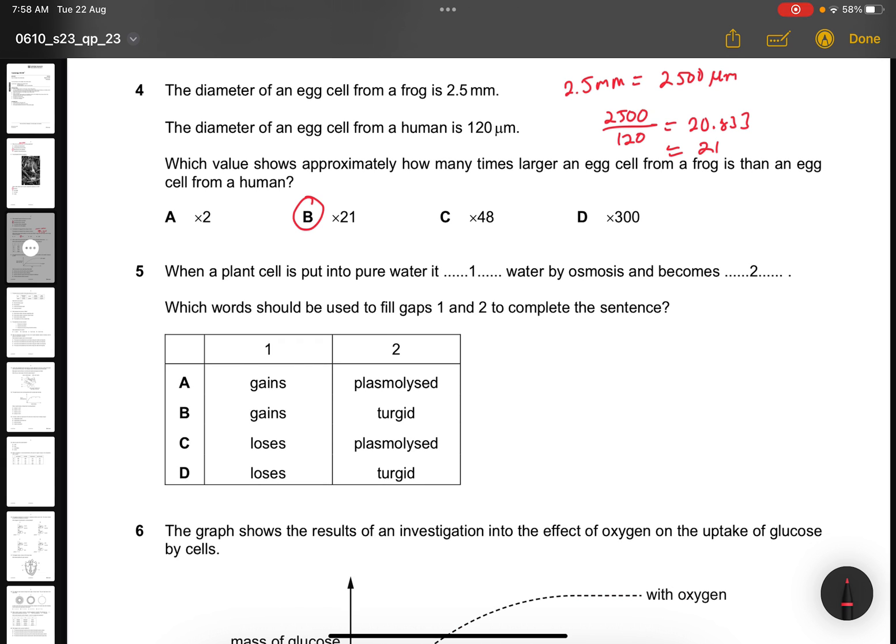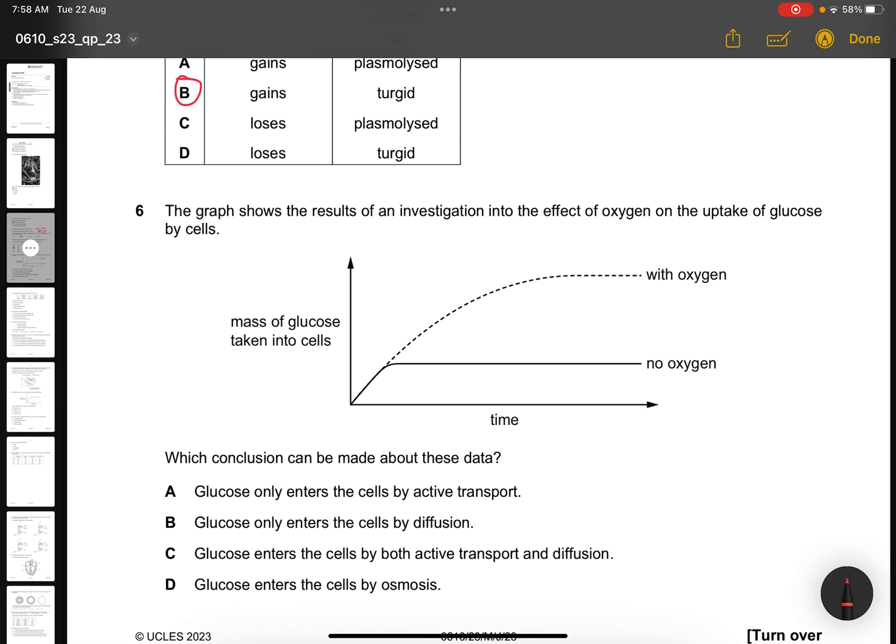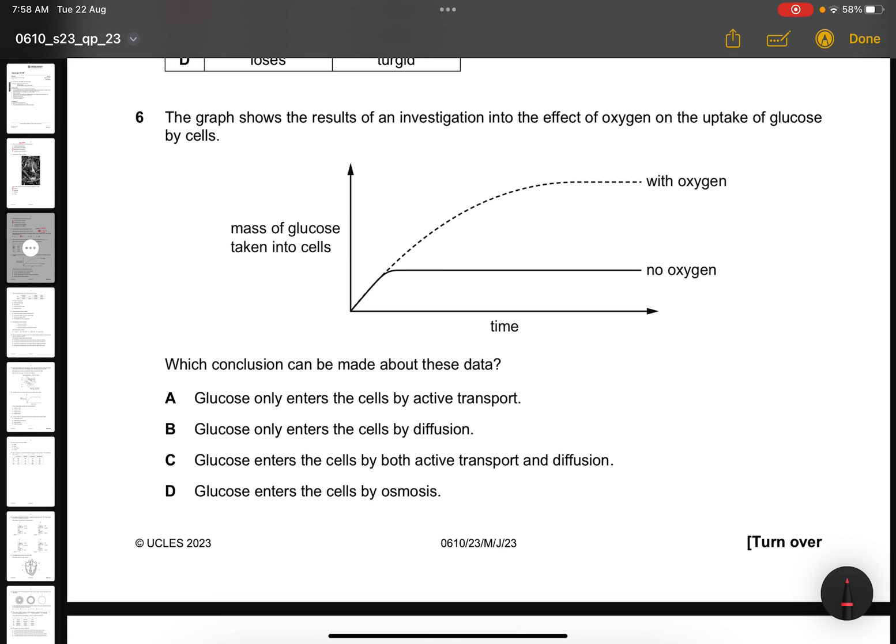Question 5. When a plant cell is put into pure water, it gains water by osmosis and becomes turgid. So the answer is B. Question 6. The graph shows the result of an investigation on the effect of oxygen on the uptake of glucose by cells. Which conclusion can be made? Glucose enters the cell by both active transport and diffusion, because when there's no oxygen, the graph still has a line there. It's not flat. If it's flat, then only active transport will happen. But since there's also a line for no oxygen, therefore diffusion also is able to work.